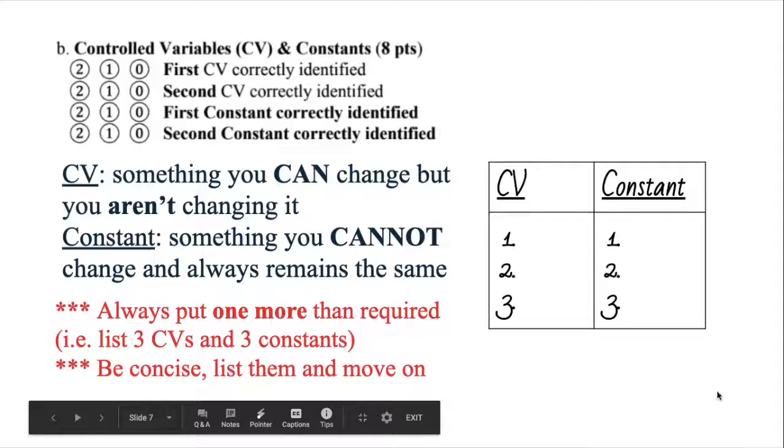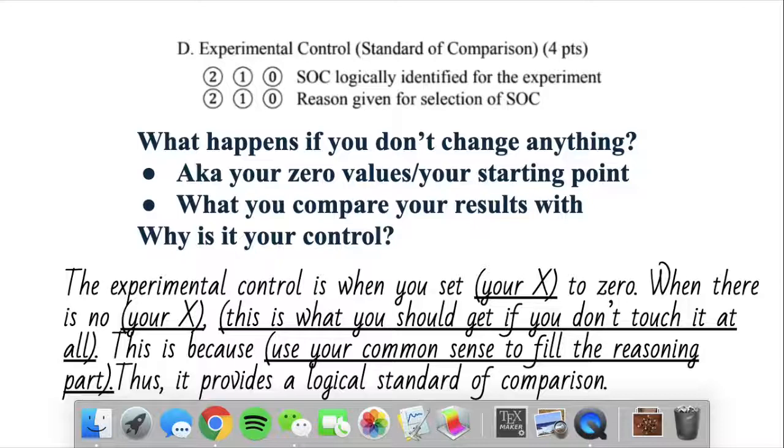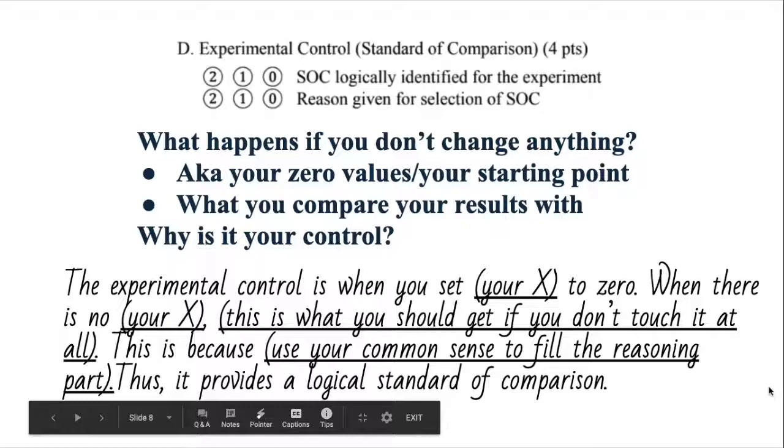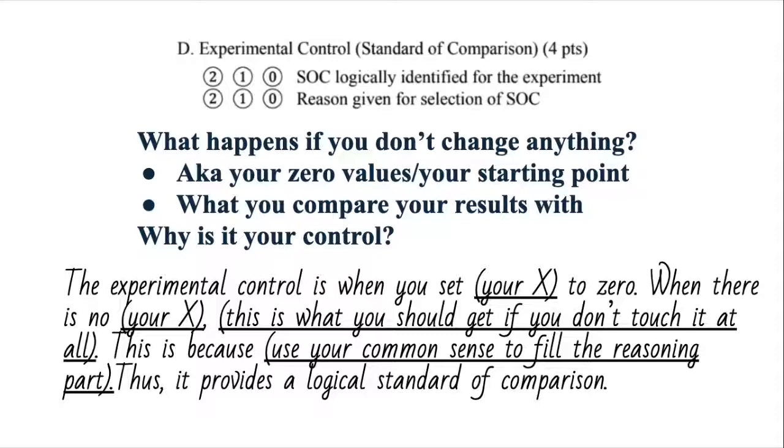Experimental control slash the standard of comparison is kind of something that you do to show, to make more sense out of your experimental data. This is what you say when you don't change anything at all. Say the zero, if you are testing solubility of sugar and water, your control would be not putting in any sugar at all. That would be a good, a common control. Yeah, so it is your zero value or your starting point. As it says, the standard of comparison, what are you comparing your results to, to make more sense out of it?